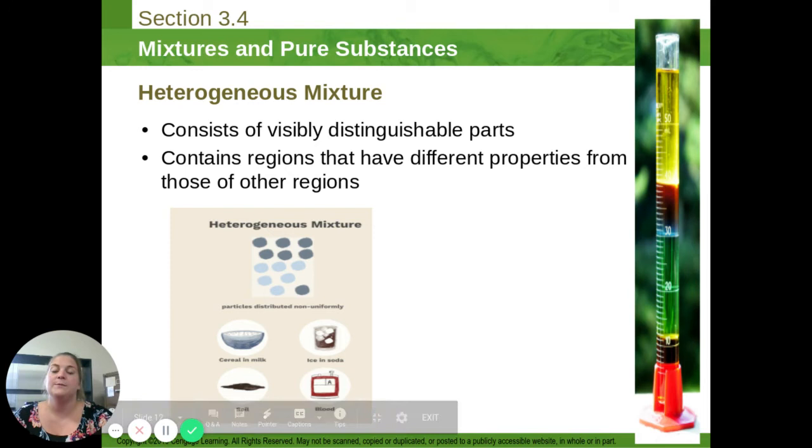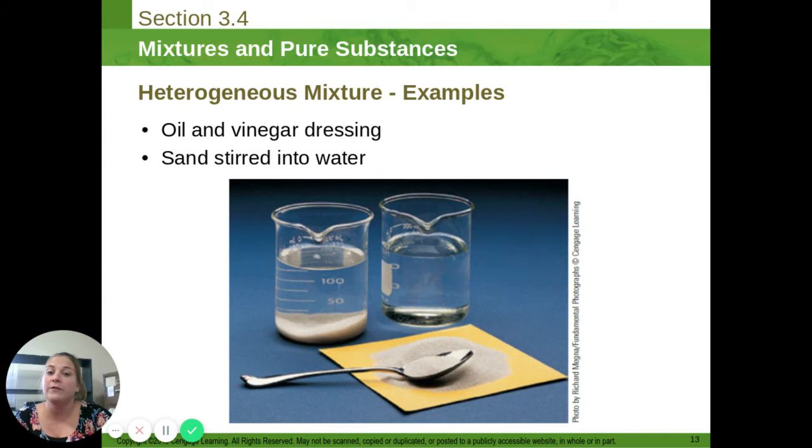Heterogeneous mixtures, you can tell the difference. What's another good example? A mixture like Moose Tracks ice cream. You can see the different pieces of peanut butter cups and fudge in the ice cream. So that's a heterogeneous mixture. Oil and vinegar, they form different layers. Sand and water, you can see the different layers.